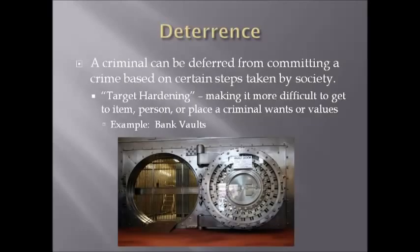Society can attempt to deter criminals from deciding to commit crimes by implementing certain precautions. Methods such as target hardening make it more difficult for the offender to access an item, person, or place they are attempting to obtain. An example of target hardening would be bank vaults — banks place vaults and various safes into their establishments to deter criminals, because the difficulty of robbing them increases severely with the presence of these vaults and safes.